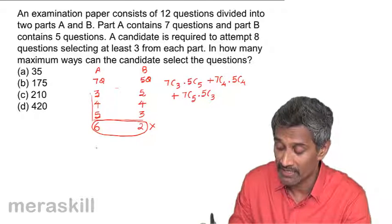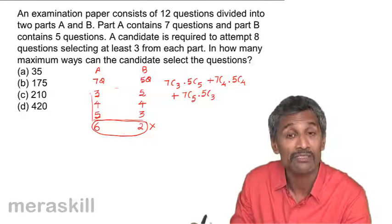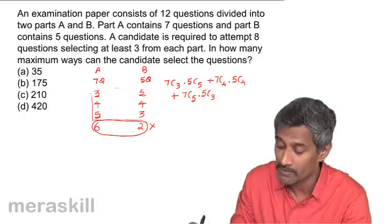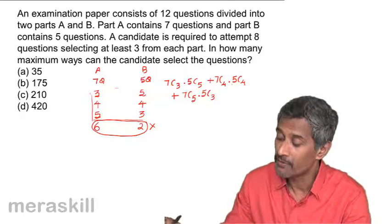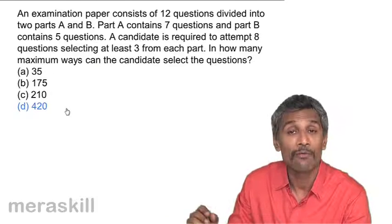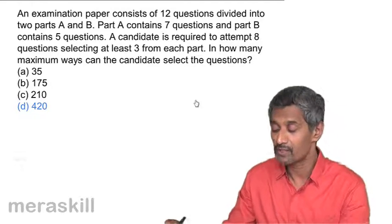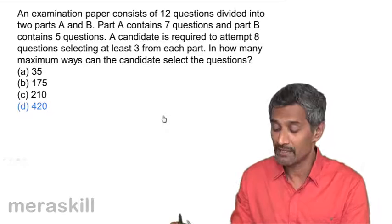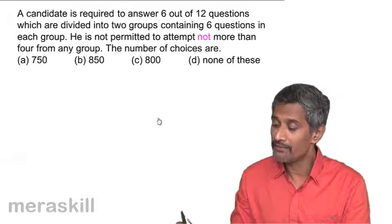Beyond this, taking six, seven, or eight from Part A would reduce Part B below three, which is not allowed. If we calculate all the valid cases, it turns out to be 420. So this is how we can solve this type of selection problem.